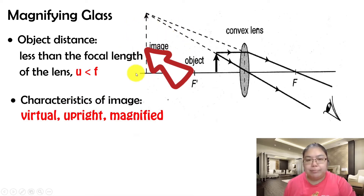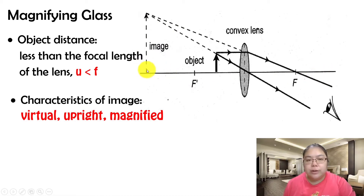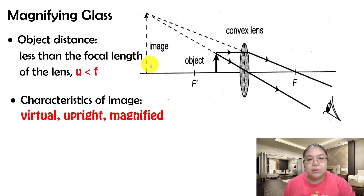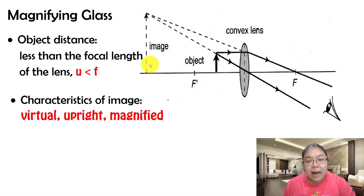Now for the characteristics: you find that the image forms on the same side — this part is the virtual part because it is above the horizontal line, so virtual. We draw it as a dotted line. The image is virtual, then upright, and the size becomes bigger. The final image is magnified because this is a magnifying glass.